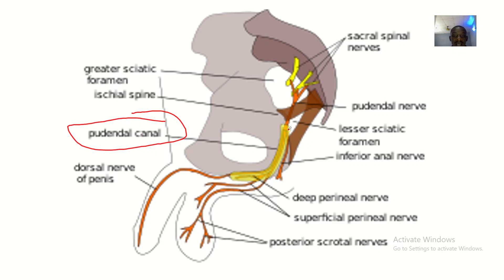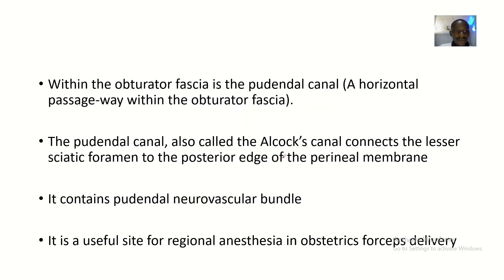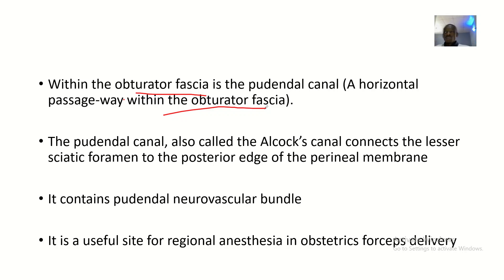This is the pudendal canal. You can see that the pudendal canal is actually just that passageway through which the pudendal nerve actually enters into the genital area. Within the obturator fascia is the pudendal canal, which is the horizontal passageway within the obturator fascia. You can remember the obturator fascia when we spoke about the ischioanal fossa — we said the lateral relations of the ischioanal fossa is the obturator internus and the obturator fascia.